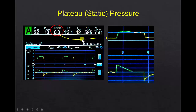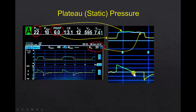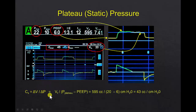The PEEP was 6 and the peak pressure was 22 — the pressure required to both stretch the lung to 600 cc's and deliver the flow. During the plateau maneuver, flow is zero, so all pressure across the resistance dissipates, and the remaining pressure is the plateau pressure — in this case 20 — which is the stretching pressure used in compliance calculations. To calculate compliance: tidal volume of 595 cc's divided by the pressure change from PEEP of 6 up to plateau of 20, which is 14, gives a compliance of 43 cc's per centimeter of water.